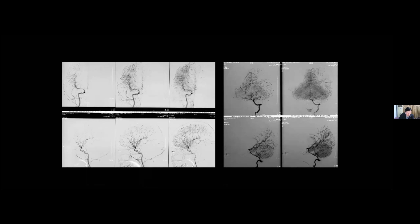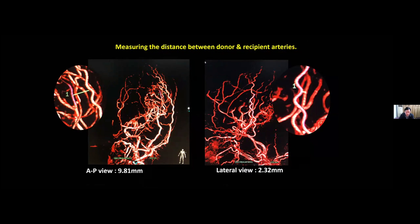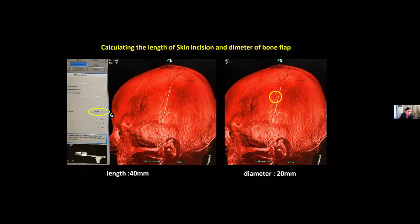This is the angiogram. This is our surgical plan, selecting the donor and the recipient artery using three-dimensional DSA. We measured the distance between the donor and the recipient artery from the three-dimensional reconstructed DSA. In the AP view, the distance between the donor and the recipient artery is around 9.8 millimeters. From the lateral view it is only 2.3 millimeters. We then calculated the length of the skin incision and the diameter of the bone flap needed to perform the bypass.